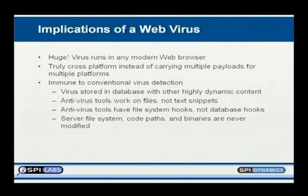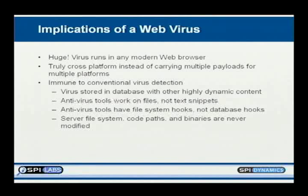The Yamanner worm is actually inside a SQL database because I've injected it into a web app. McAfee doesn't fire off a warning — but as soon as you copy it to a text file, it pops up saying 'I found Yamanner.' Antivirus tools work on files, not text snippets in a database. Once I start injecting your database or moving this stuff around, virus scanners won't detect it. Your virus scanner hooks file systems — it doesn't hook your web browser or database. And with integrity software like Tripwire or MD5 sums, I'm not modifying your file system, your code paths, or your binaries, so all your integrity checks pass.